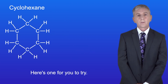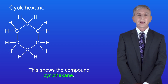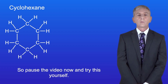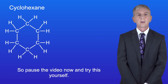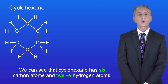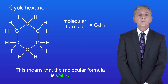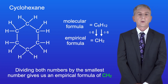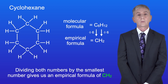Here's one for you to try. This shows the compound cyclohexane. I'd like you to work out the molecular formula and the empirical formula — pause the video now and try this yourself. Okay, we can see that cyclohexane has 6 carbon atoms and 12 hydrogen atoms. This means that the molecular formula is C6H12. Dividing both numbers by the smallest number gives us an empirical formula of CH2.